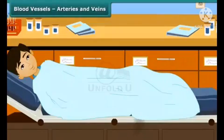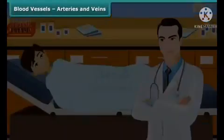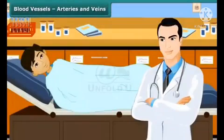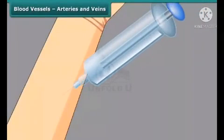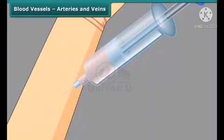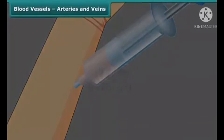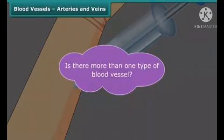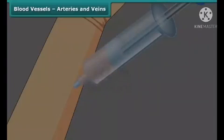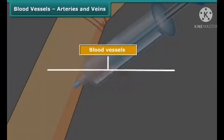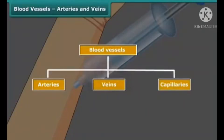Once when Rahul was unwell, his doctor recommended a blood test. The technician collecting blood samples first checks for a particular kind of blood vessel to prick and collect the blood. Is there more than one type of blood vessel? Yes — there are three types of blood vessels in our body: arteries, veins, and capillaries.